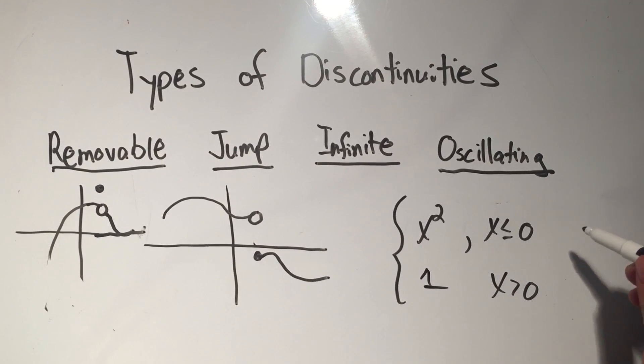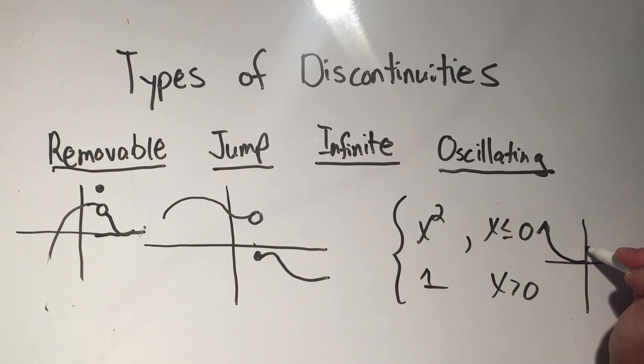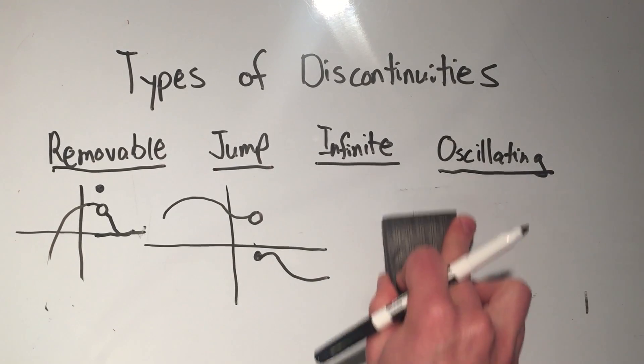Kind of boring, but that would look like, well, before 0, I was x squared. And then after 0, I'm just the horizontal line at 1. So you'll see here, I hop up to something else. That's an example of a jump discontinuity.